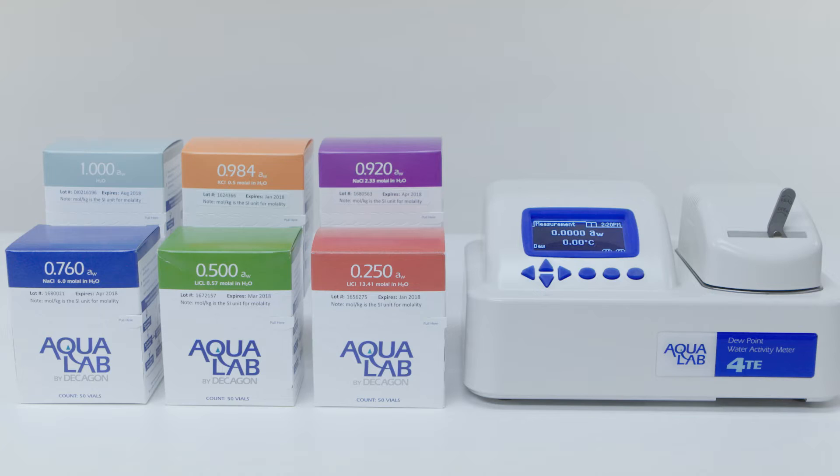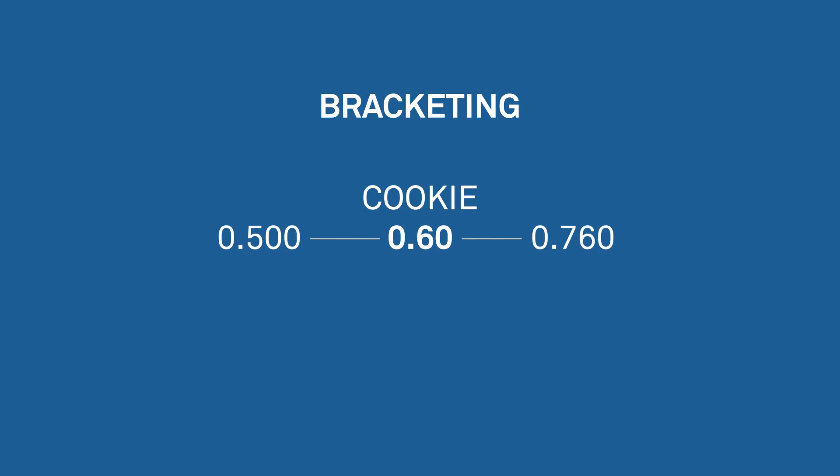The best way to verify your instrument is to use a technique we call bracketing. If you are measuring a cookie that typically has a water activity of 0.60, you should use the 0.500 and 0.760 standards to verify. If you are measuring milk powder in the 0.3 range, you should use the 0.250 and 0.500 standards to verify.